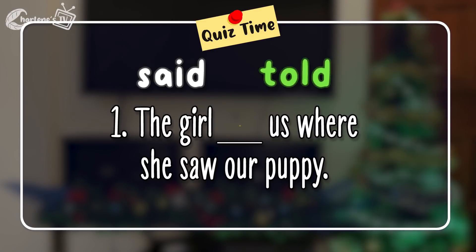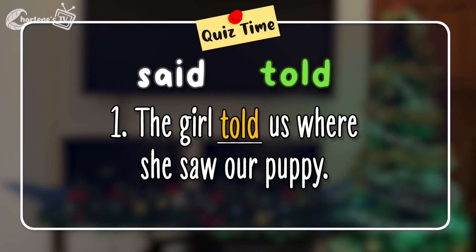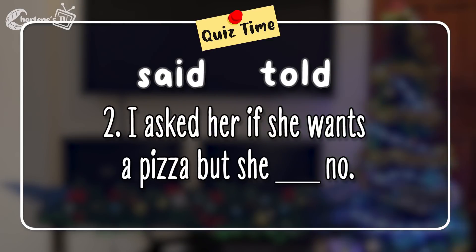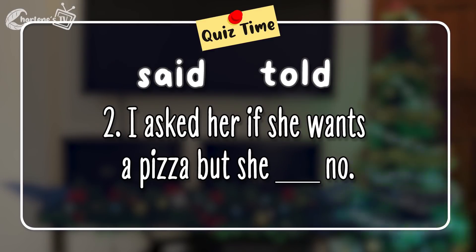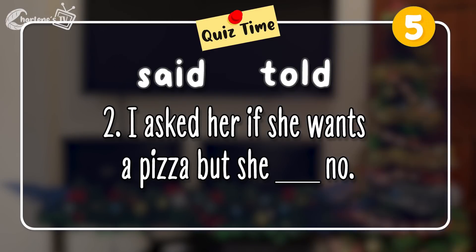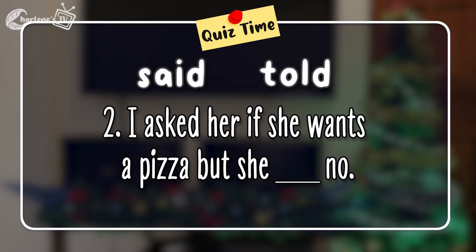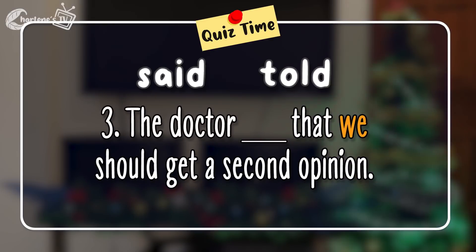The correct answer is told. Ang kasunod na word ay yung us — kami or namin — tao yan. Kaya letter T ang sagot natin — told. Number two: I asked her if she wants a pizza, but she blanked no. Said or told? The correct answer is said — no lang yung kasunod, hindi naman tao yan. Said. Number three: The doctor blanked that we should get a second opinion. Said or told?